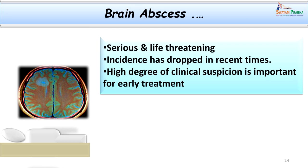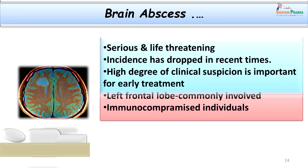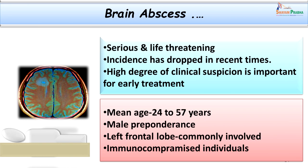Brain abscess particularly, as I gave the example here, is a serious and life-threatening infection. The incidence has dropped in previous decades because of the advent of useful and very effective antibiotics. However, a high degree of clinical suspicion is very important because it helps us diagnose the case clinically, confirm it laboratory-wise, and start specific and prompt therapy. The mean age of occurrence of brain abscess is between 24 to 57 years, though it can occur at any age with precipitating factors like trauma or malignancy.